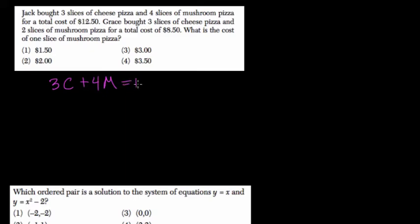Jack bought three slices of cheese pizza and four slices of mushroom, and that was $12.50. Grace bought three slices of cheese and two slices of mushroom, and that was $8.50.